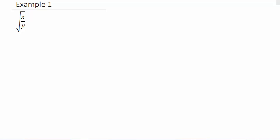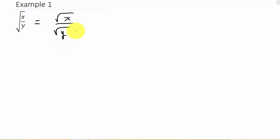Alright, let's go ahead and simplify this. I've got four examples. We have the square root of x over y. We know that we can't have a fraction under the radical, so first thing let's go ahead and split the radical up into square root of x over square root of y. There's nothing else I can do with them but I do need to get rid of the radical in the denominator, so I'm going to multiply the numerator and denominator by the square root of something over the square root of something.